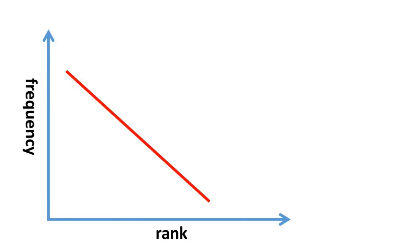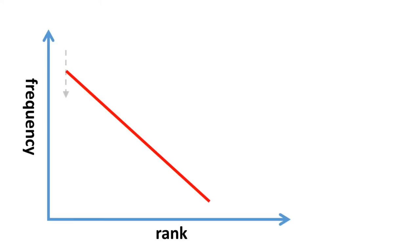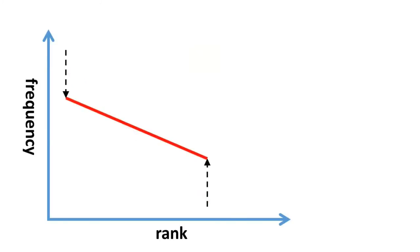Suppose unification began to win, concentrating more meaning in fewer words. Then the common words would be more frequent, and there would be fewer rarer words — the graph would be steeper. On the other hand, suppose diversification began to win, resulting in a more even usage of the different words. Then the common words would be less frequent, and the rarer words would be more frequent — the graph would be less steep.